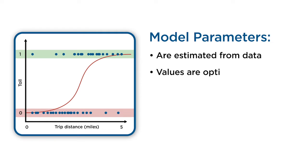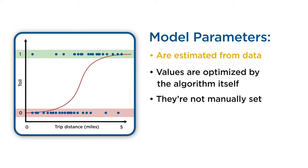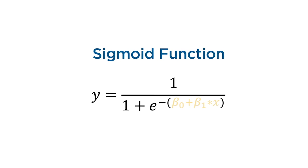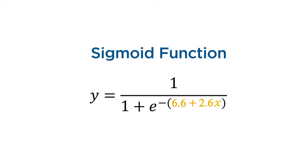A model parameter is a configuration variable that is internal to the model and whose value is estimated from the data. Model parameters are learned from the training data and their values are optimized by the machine learning algorithm itself. Therefore they are not set manually by the data scientist. For example, in logistic regression the coefficients for the sigmoid equation are calculated based on the data.